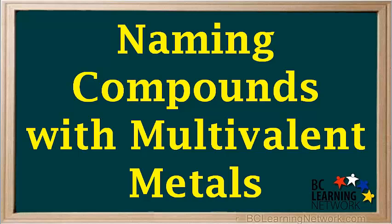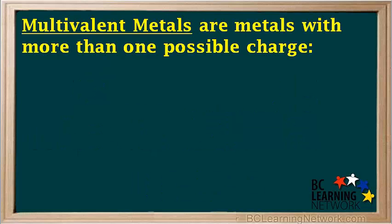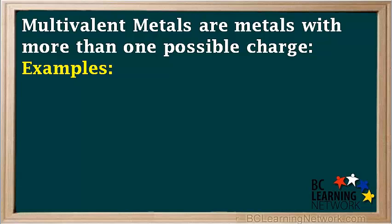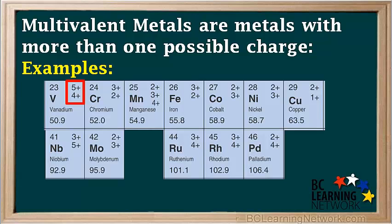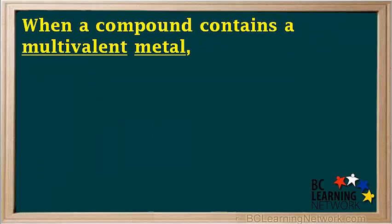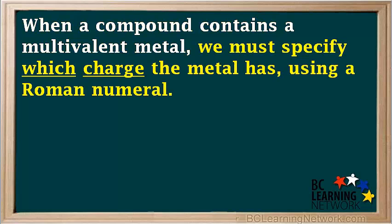Things get a little more complicated when we have to name a compound that contains a multivalent metal. Multivalent metals are metals with more than one possible charge. These metals are usually found in the middle section of the periodic table, and are called transition metals. Here are a few examples. Notice that all of these have more than one possible charge, shown on the top right of their box. When a compound contains a multivalent metal, we must specify which charge the metal has using a roman numeral.